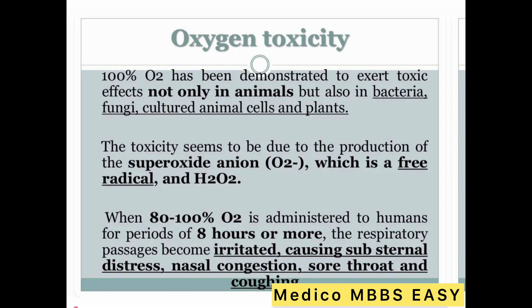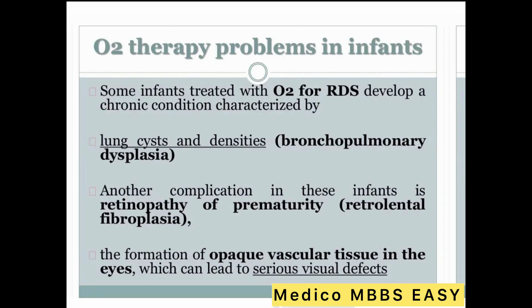Symptoms of oxygen toxicity include substernal distress, nasal congestion, sore throat, and cough. In infants, some treated with oxygen for respiratory distress syndrome (RDS) develop a chronic condition characterized by lung densities — bronchopulmonary dysplasia. Another complication in these infants is retinopathy of prematurity, or retrolental fibroplasia, which is deformation of fibrovascular tissue in the eyes and can lead to serious visual defects.